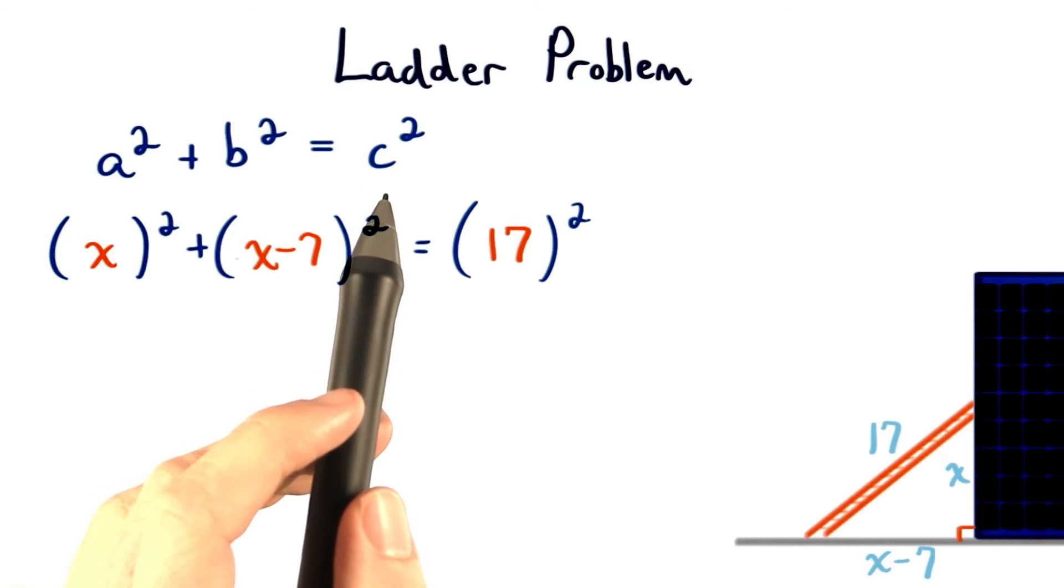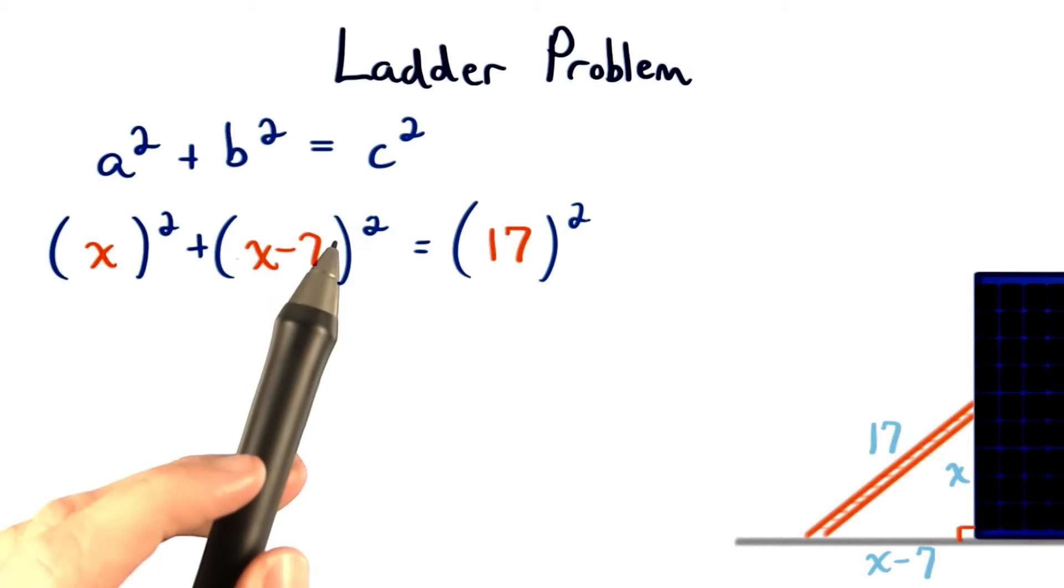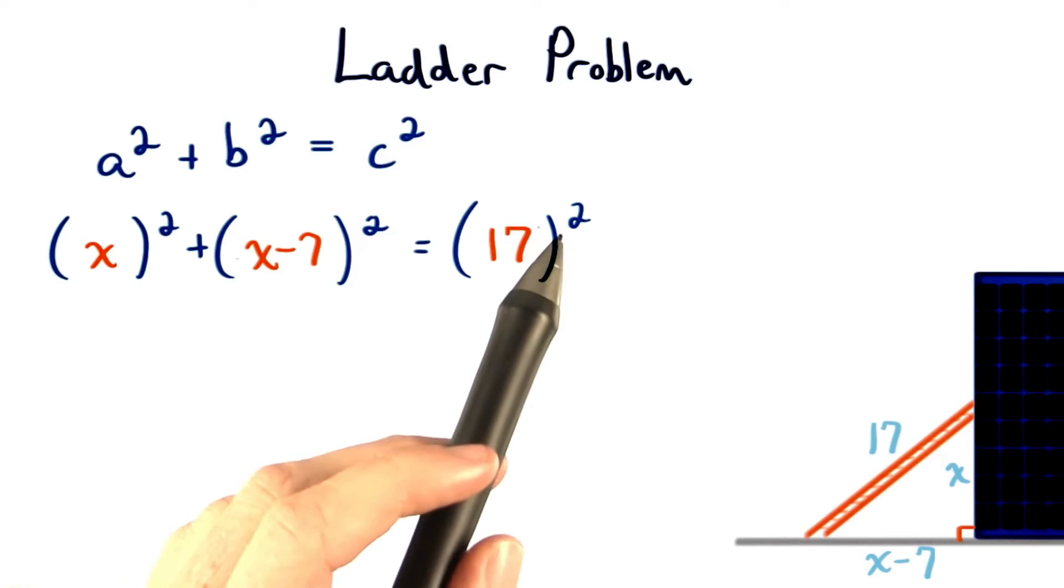When we use the Pythagorean theorem, we'll have x squared plus x minus 7 squared equals 17 squared.